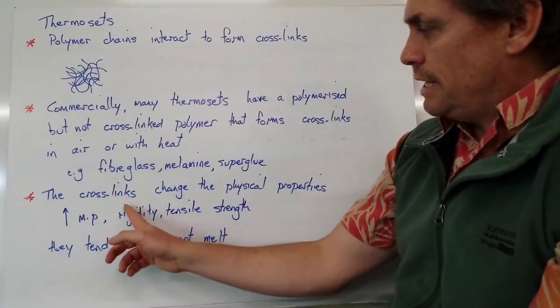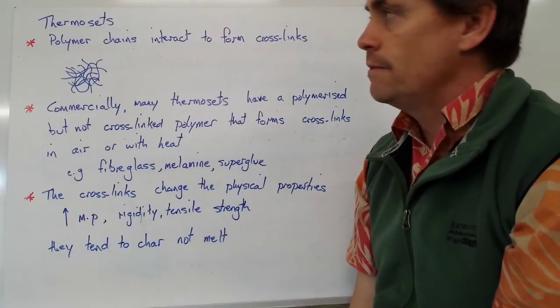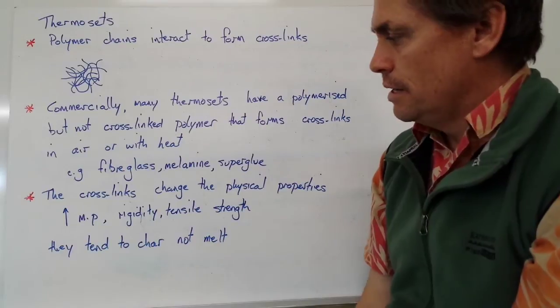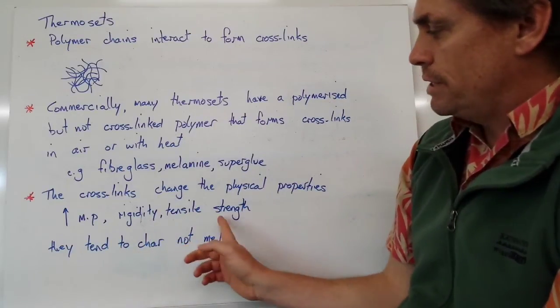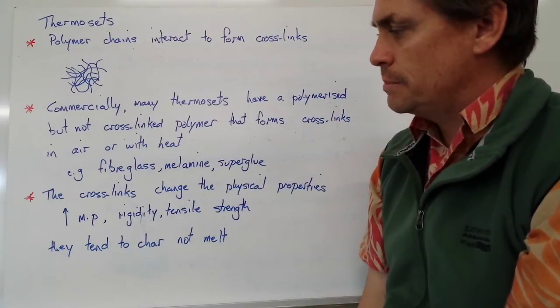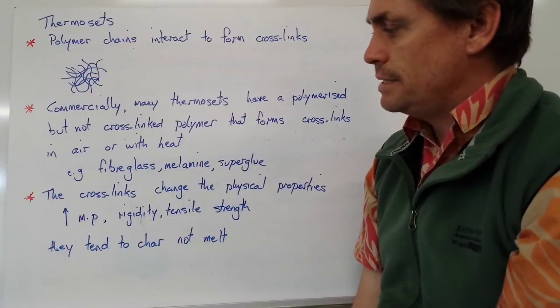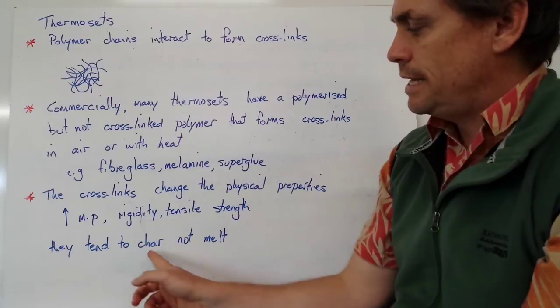Those cross-links change the physical properties of our thermoset plastic. We've got an increased melting point, increased rigidity of the polymer, and increased tensile strength. If we expose these to a flame, unlike our thermoplastics which tend to melt at a low temperature, our thermosets tend to char.